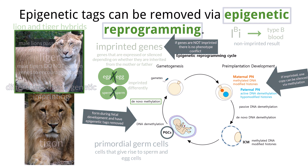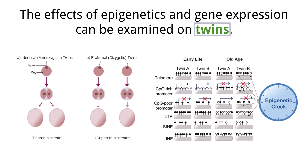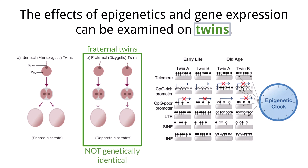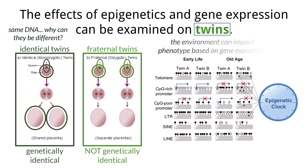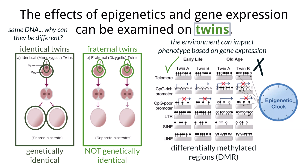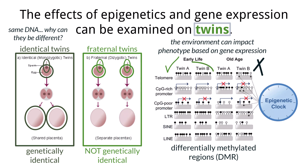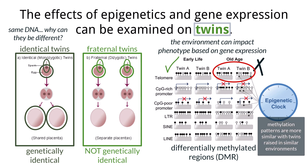Twins are one way to examine the effects of epigenetics on gene expression. Fraternal twins, or dizygotic twins, are not genetically identical — there were two eggs and two sperm. Identical twins are genetically identical, with one egg fertilized by one sperm, which then divides and produces two genetically identical offspring. This begs the question: if they have the exact same DNA, why can identical twins be different? We now know that the environment can affect phenotype by affecting which genes are expressed and which are silenced, so it is possible to have one twin that is healthy and another who is not. Scientists look at differentially methylated regions, or DMRs, in monozygotic twins to compare different methylation patterns and see if disease is connected to these differences. There is not much difference in methylation patterns in newborns, but as twins age the differences increase. Methylation patterns are more similar in twins raised in the same environment than in twins raised in different environments.